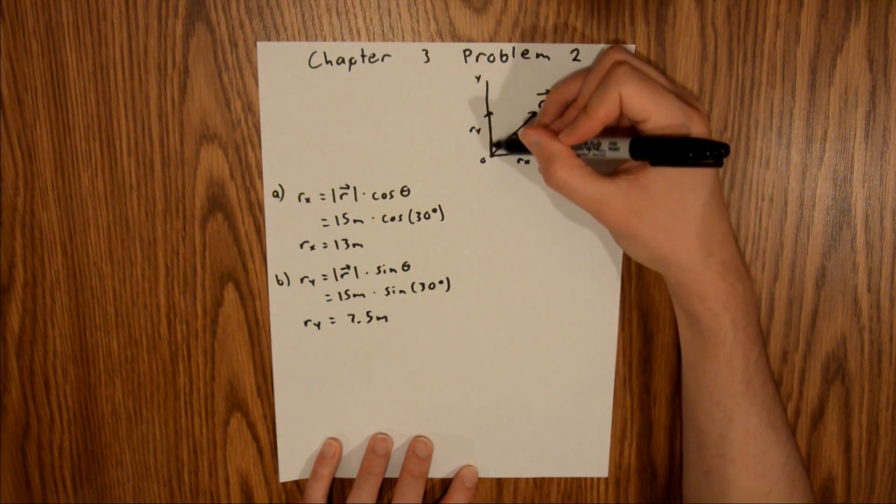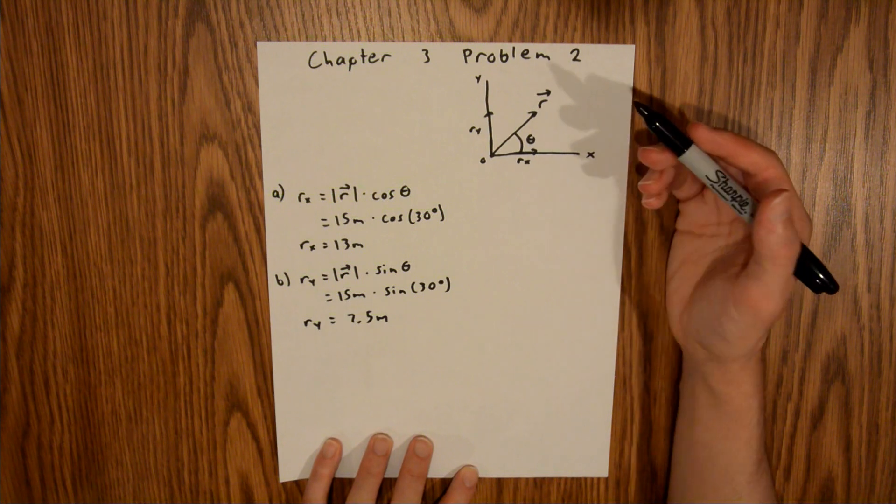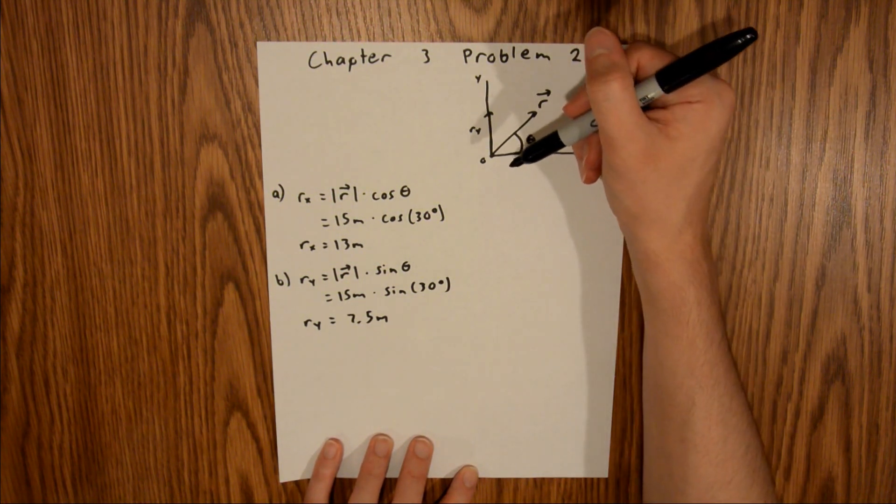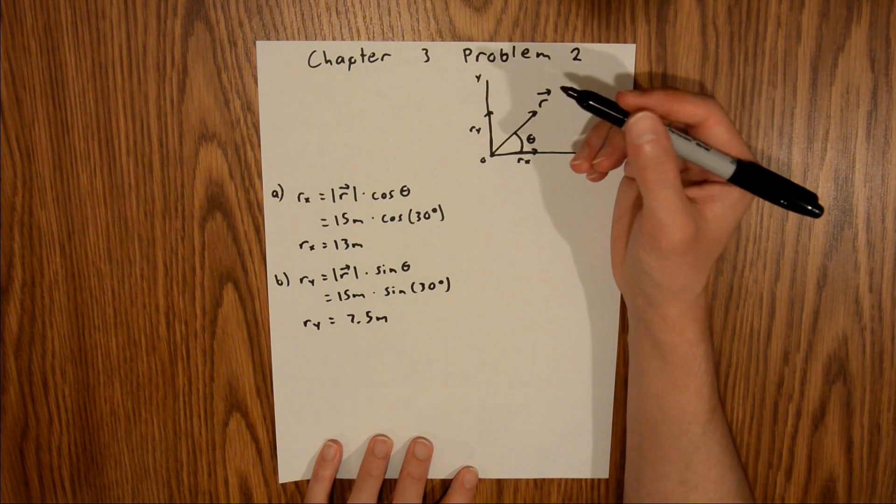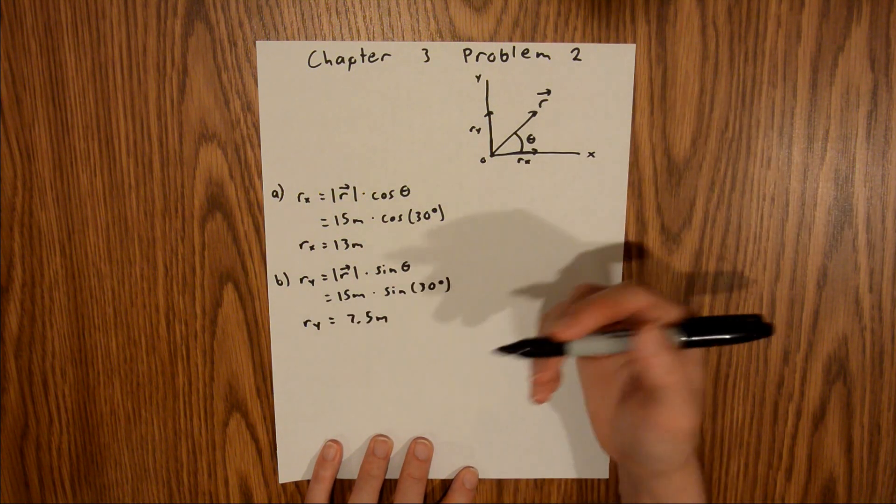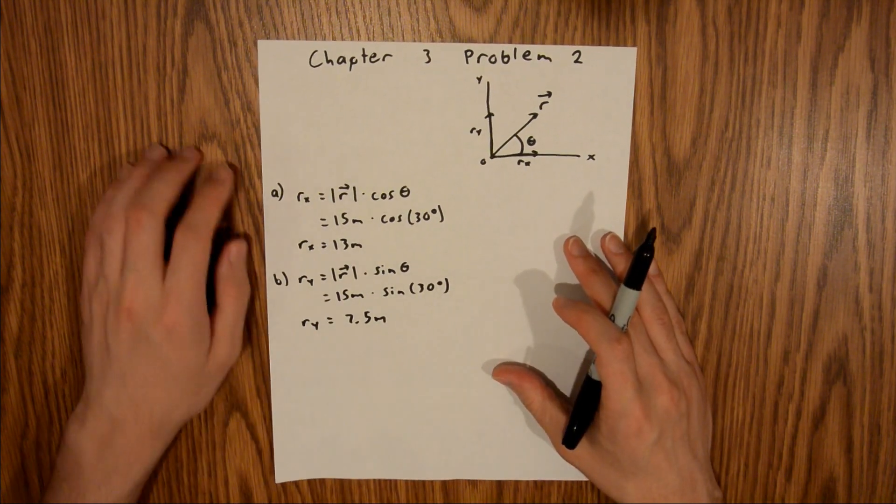This right here is a 90 degree angle. So if we were at a 45 degree angle, that means that our x and y components would be equal. But since we are at 30, that means that your vector is pointed more in the x direction than it is in the y direction, meaning that the magnitude of the x component needs to be bigger than the magnitude of the y component. So everything makes sense. And these two are your final answers to this problem.